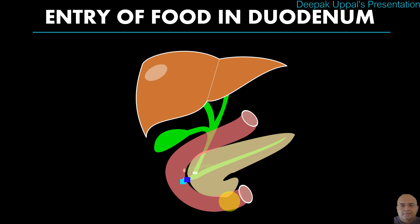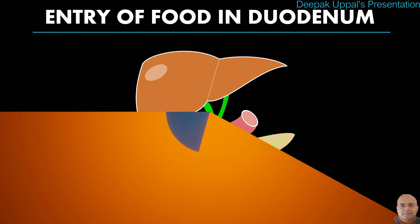Finally, all juices enter the duodenum through the sphincter of Oddi and the accessory pancreatic duct, causing digestion of food.